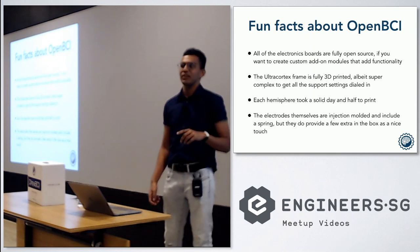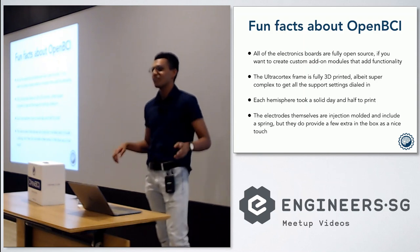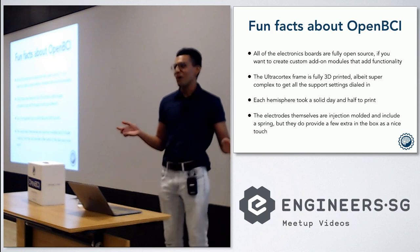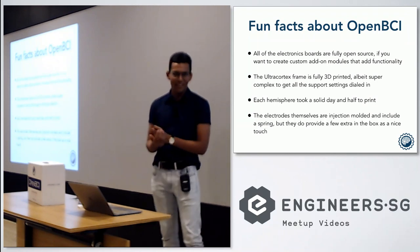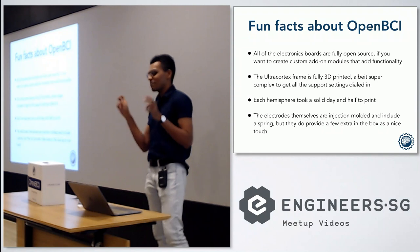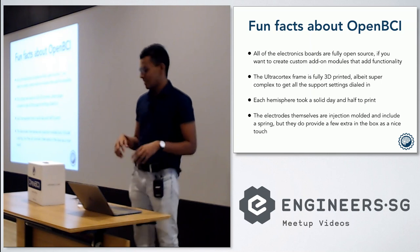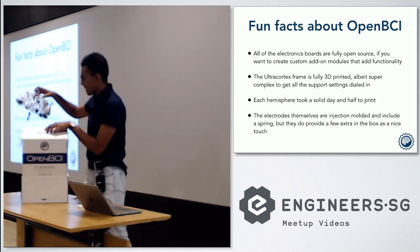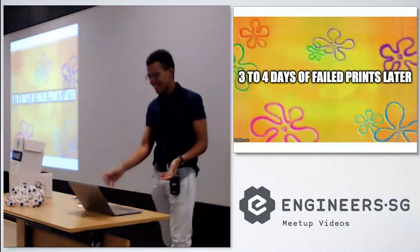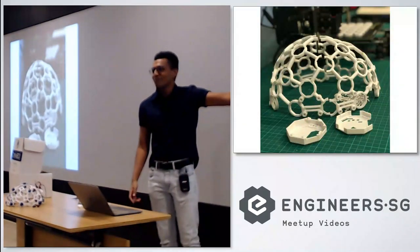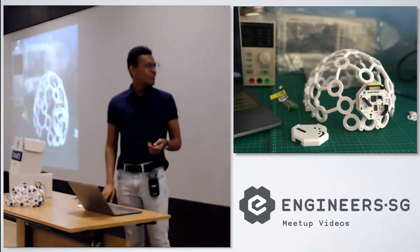Unfortunately, to print one hemisphere of this OpenBCI headset — it consists of two hemispheres — it takes about a solid day and a half. So basically I didn't sleep for three days while my printer was in my room printing these headsets. And for the electrodes themselves, they are injection molded and come with springs. Those are really the most proprietary parts of the system, but they provide a few extras in the box. These hemispheres are really, really hard to print because they have a lot of support materials. About three to four days of failed prints later, I got the frame out — it took about two tries for each hemisphere because the supports kept failing.